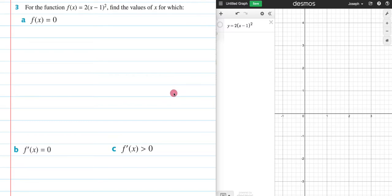We are going through exercise 17D, and in this video we will be answering question 3, which says for the function f(x) = 2(x-1)^2, find the values of x for which f(x) = 0.